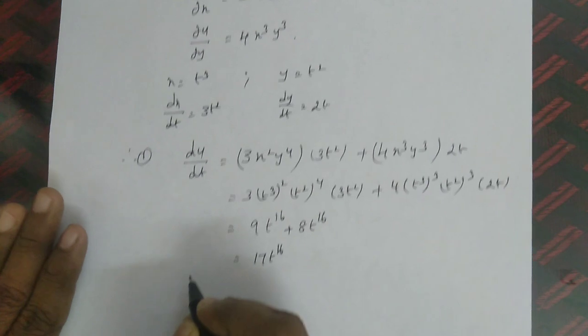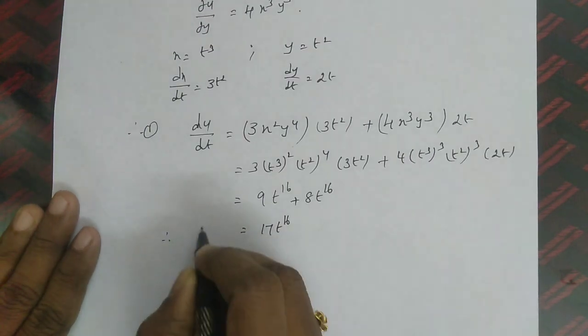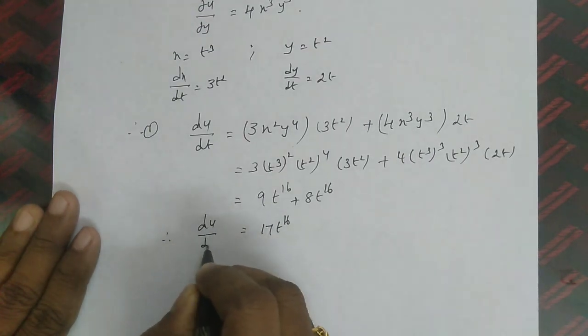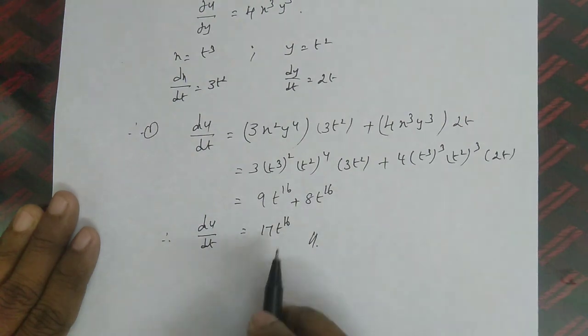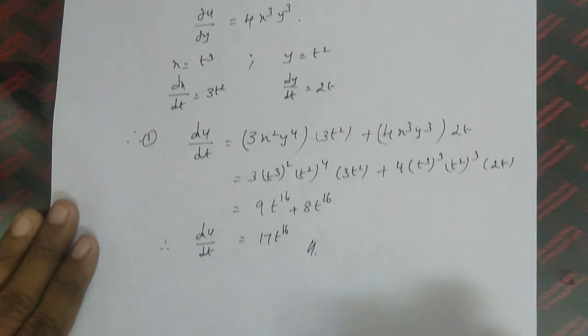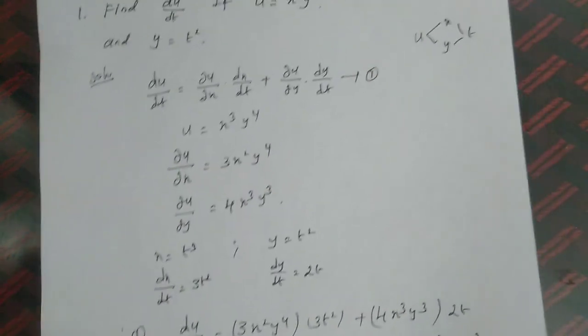Therefore, our final answer is du/dt = 17t¹⁶. Now look at the next problem.